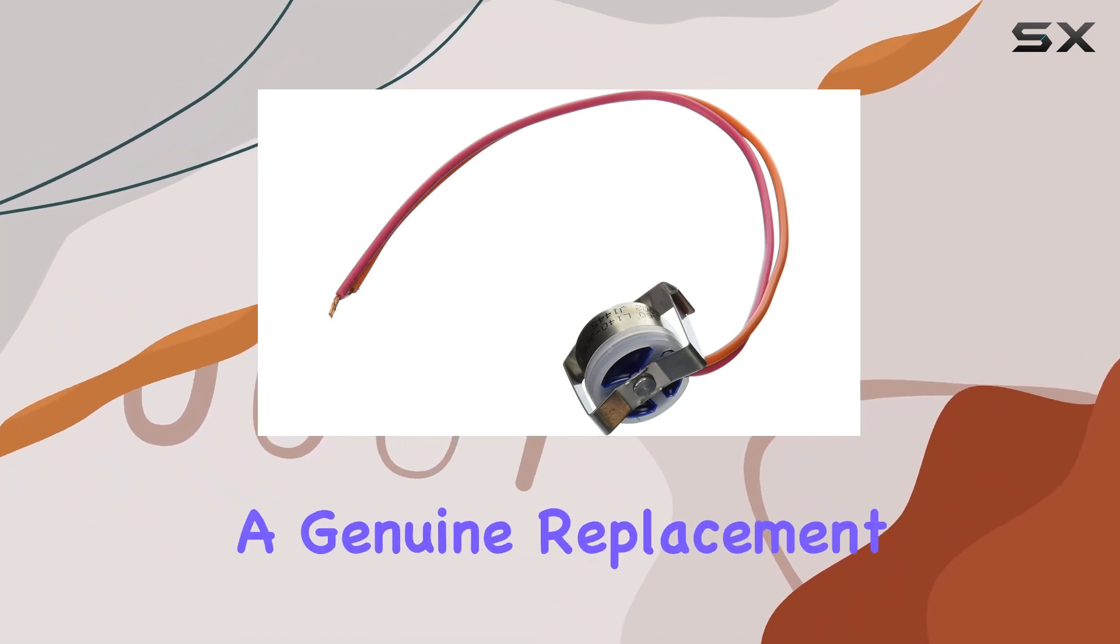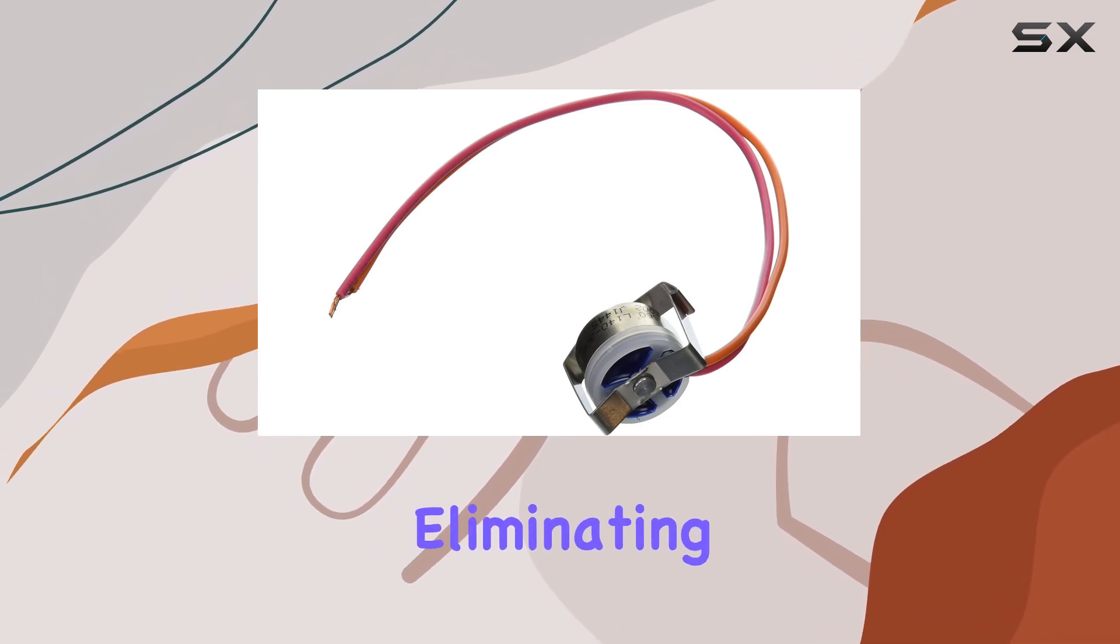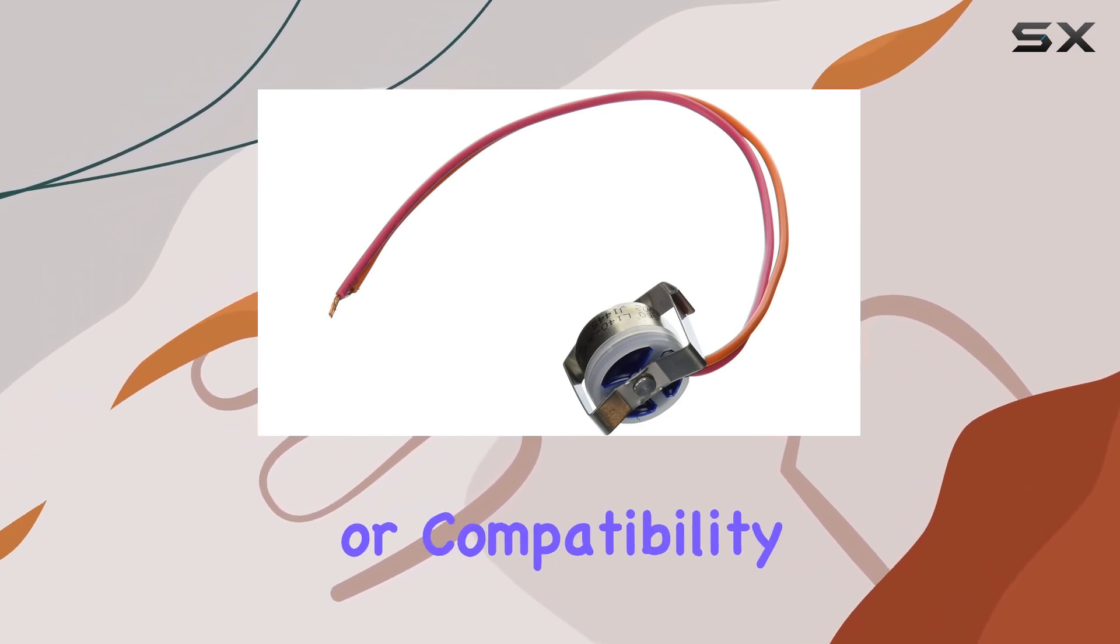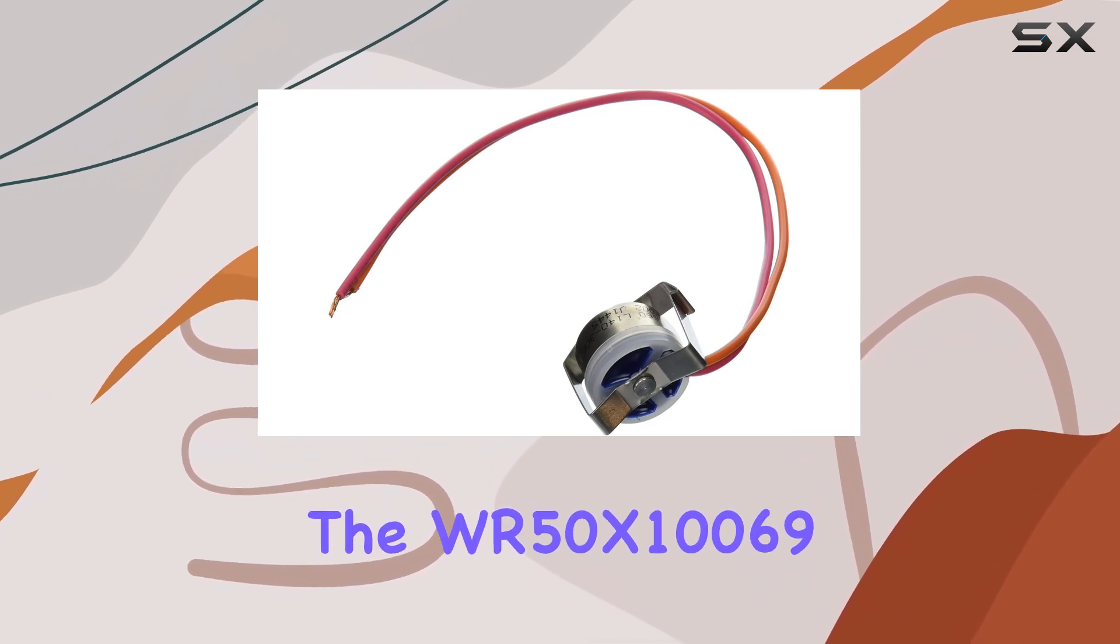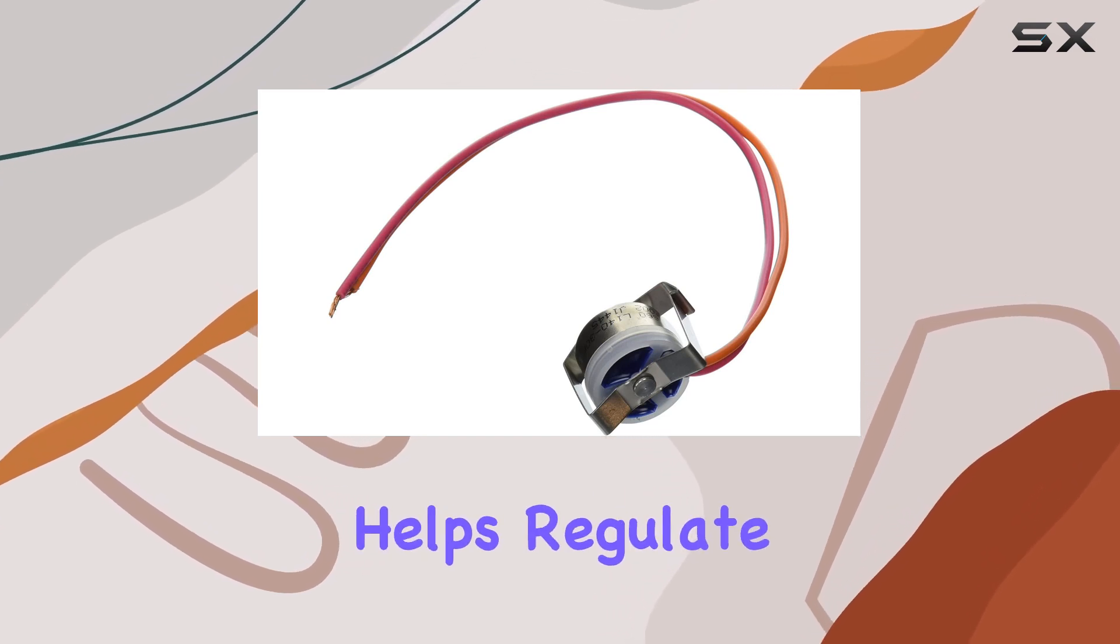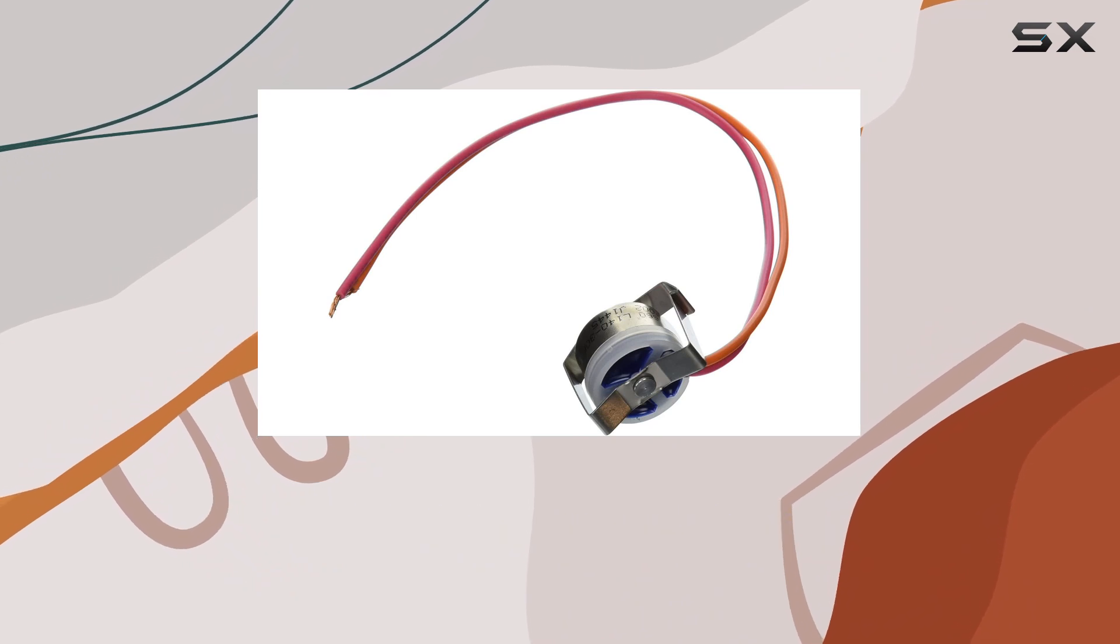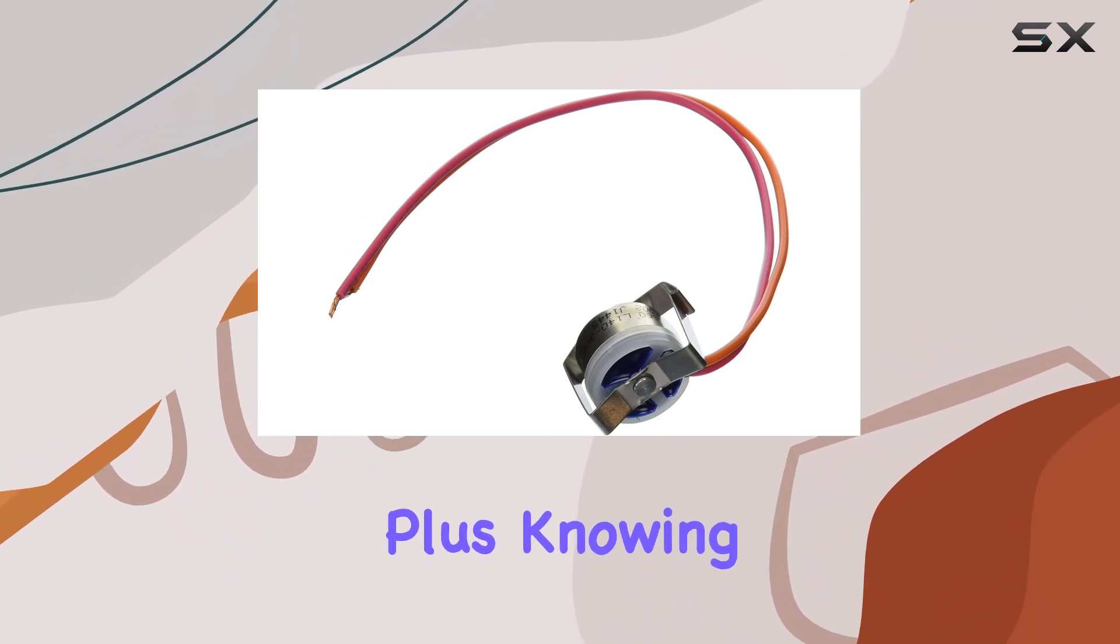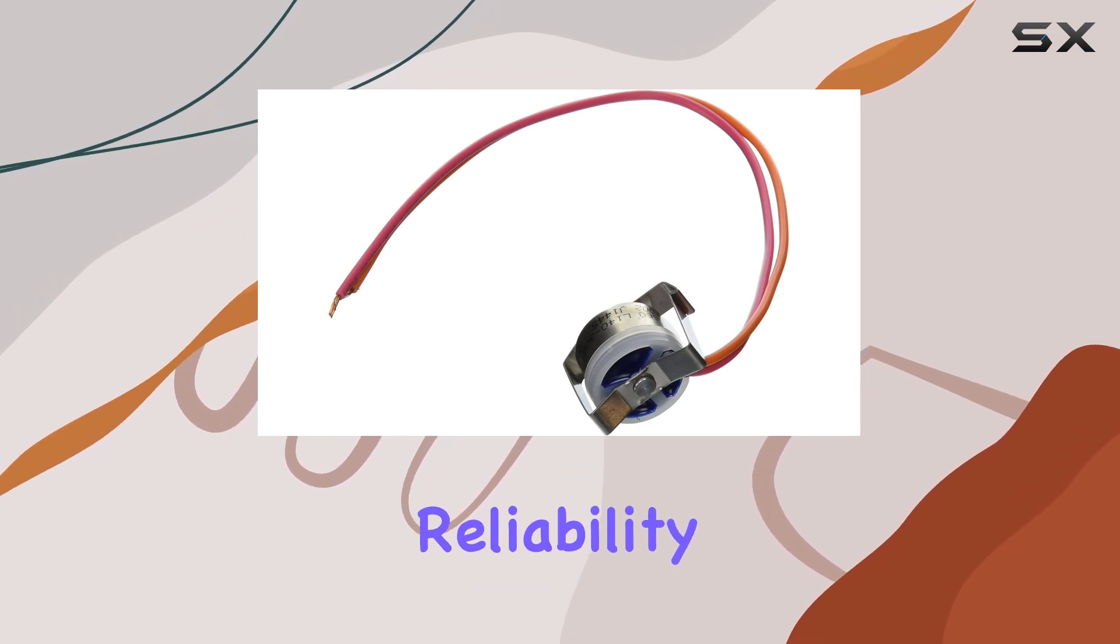And since this is a genuine replacement part, you can trust that it will fit seamlessly into your GE refrigerator, eliminating any guesswork or compatibility issues. In terms of performance, the WR50X10069 does its job admirably. It helps regulate the defrost cycle efficiently, ensuring that your fridge stays at the right temperature without any frost buildup. Plus, knowing that it's a genuine part from GE provides peace of mind in terms of longevity and reliability.